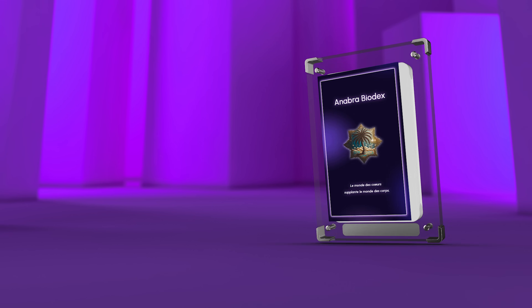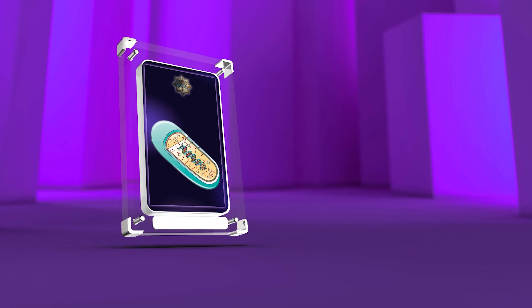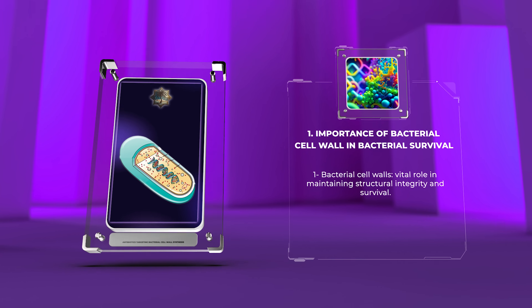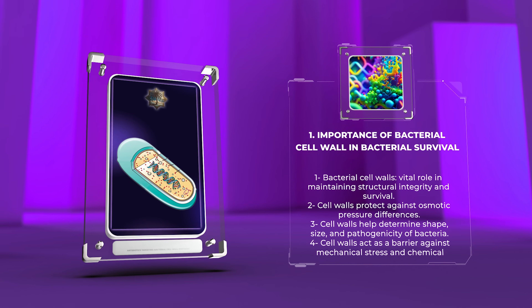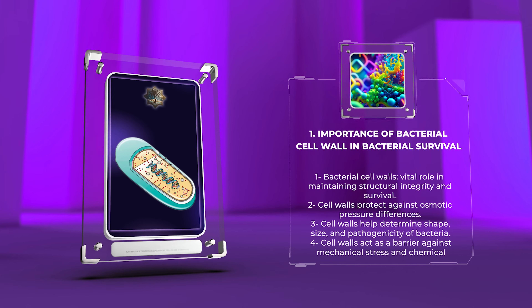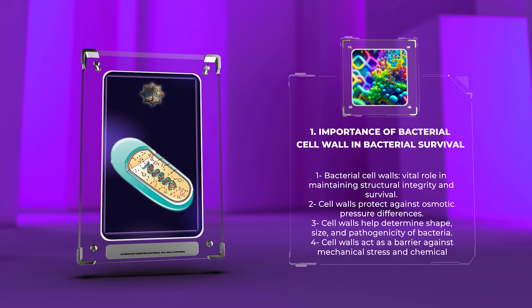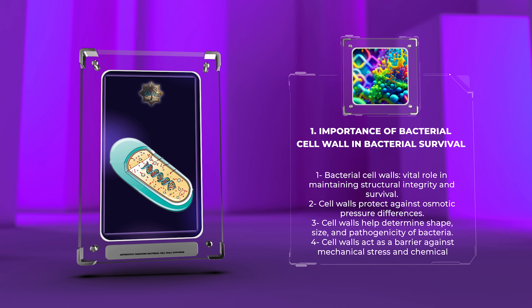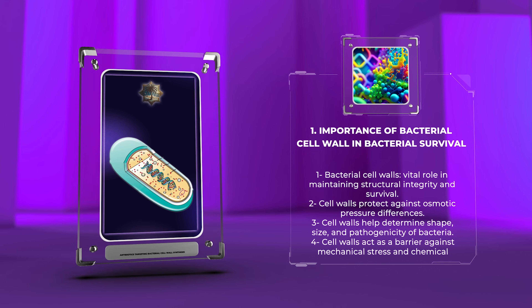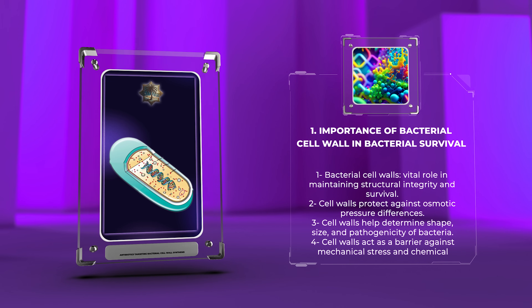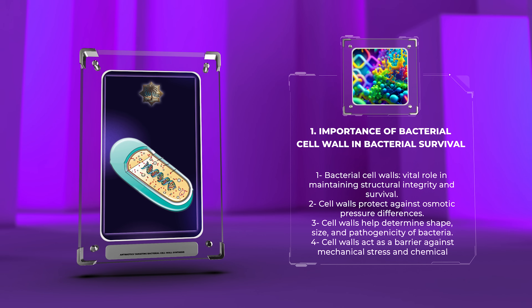Bacterial cell walls play a vital role in maintaining the structural integrity and survival of bacteria. These cell walls protect against the osmotic pressure differences between the bacterium's internal environment and the external surroundings. Additionally, they help in determining the shape,